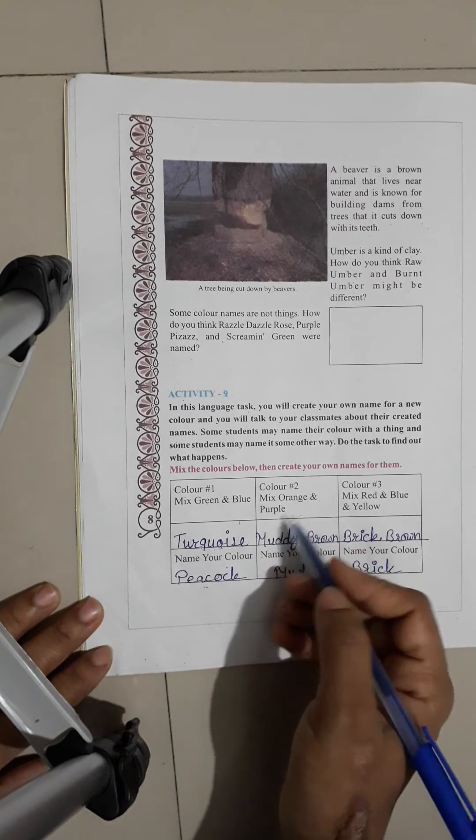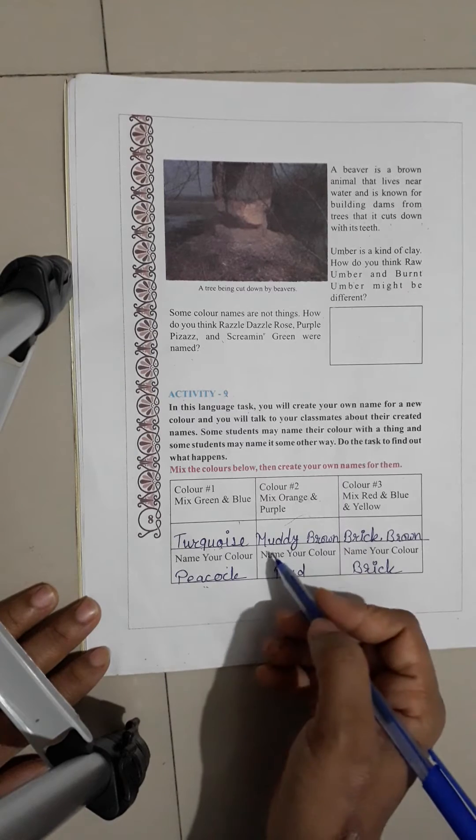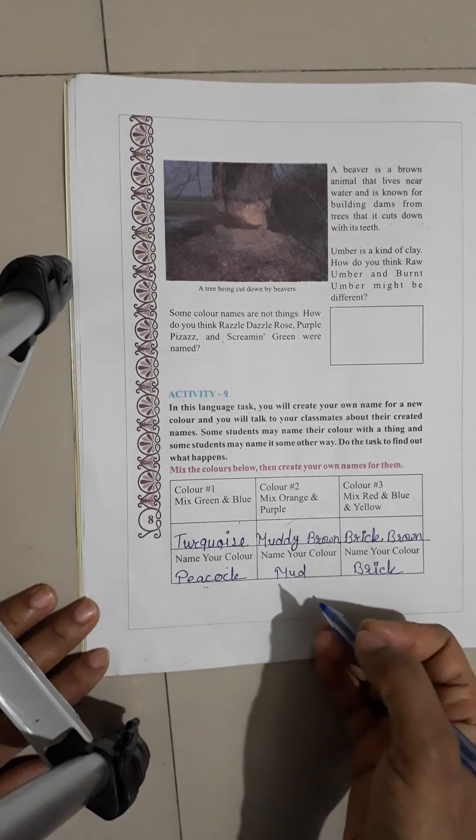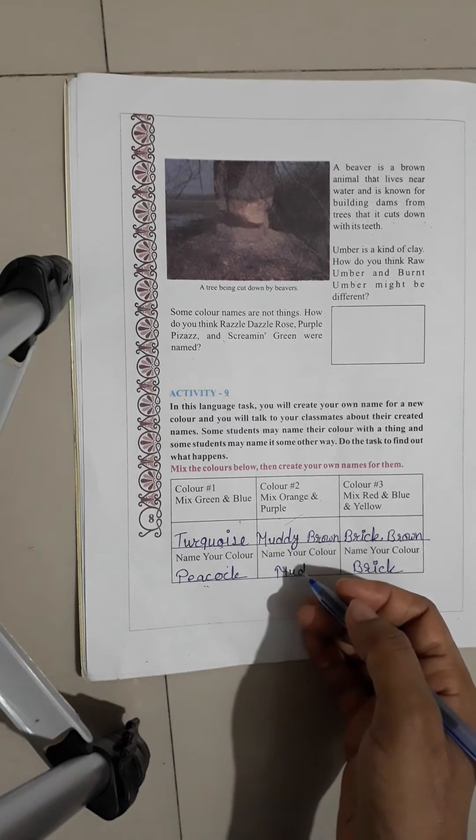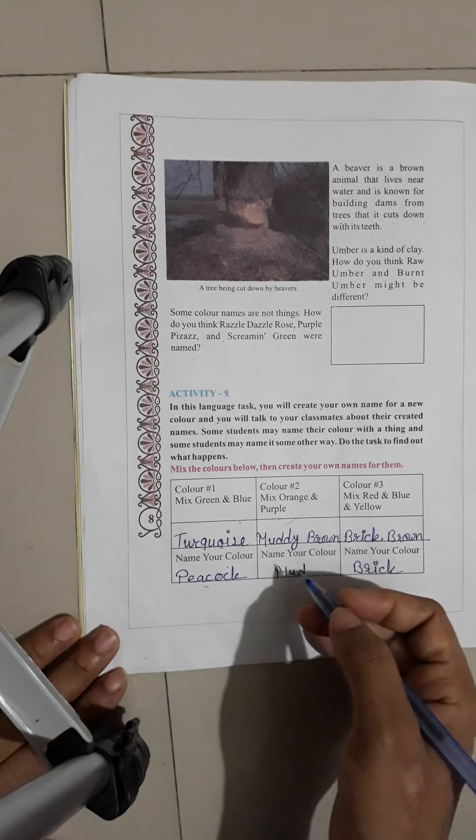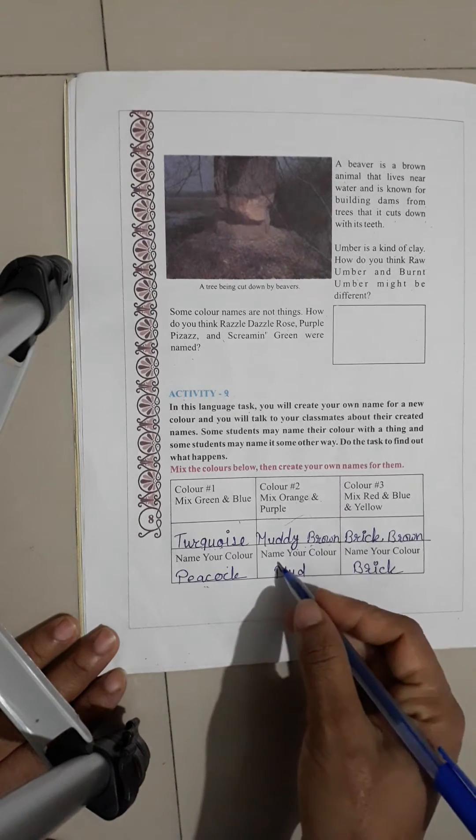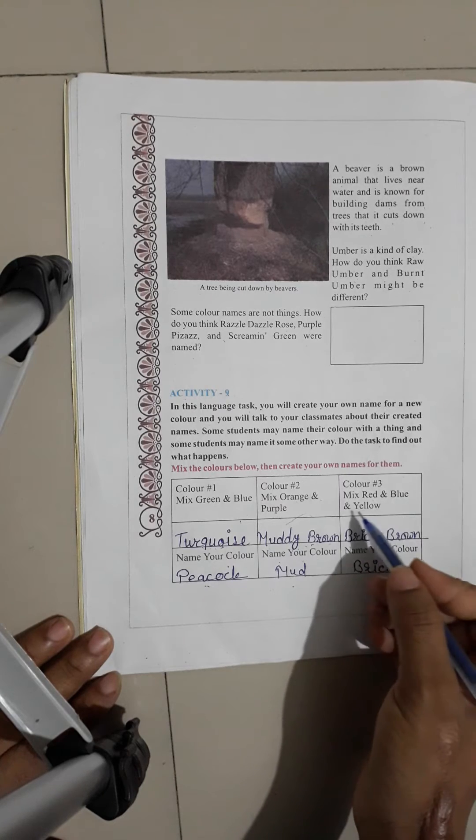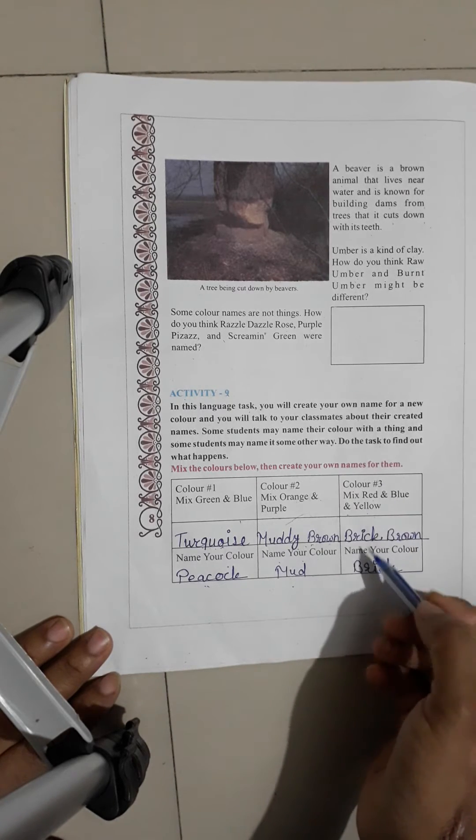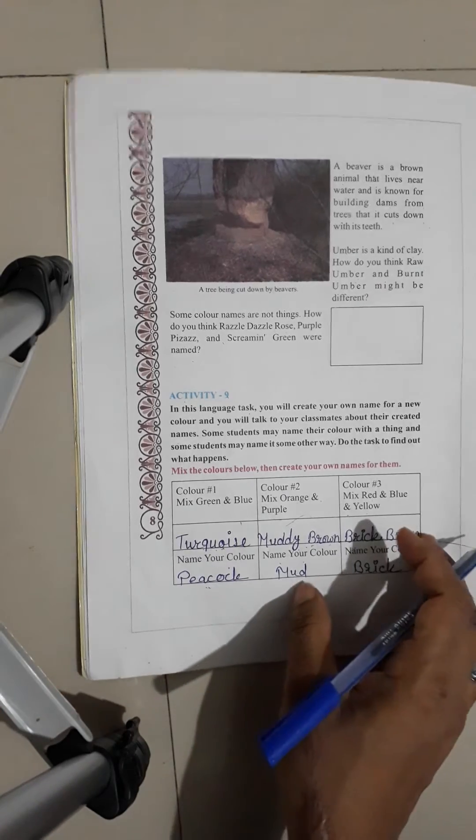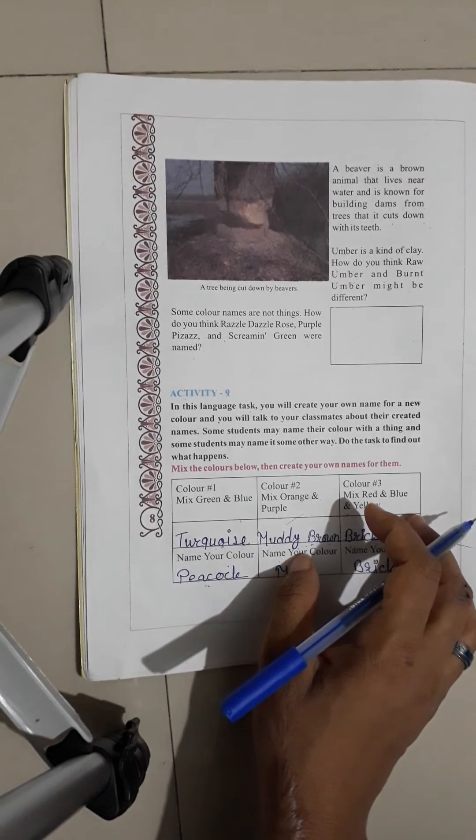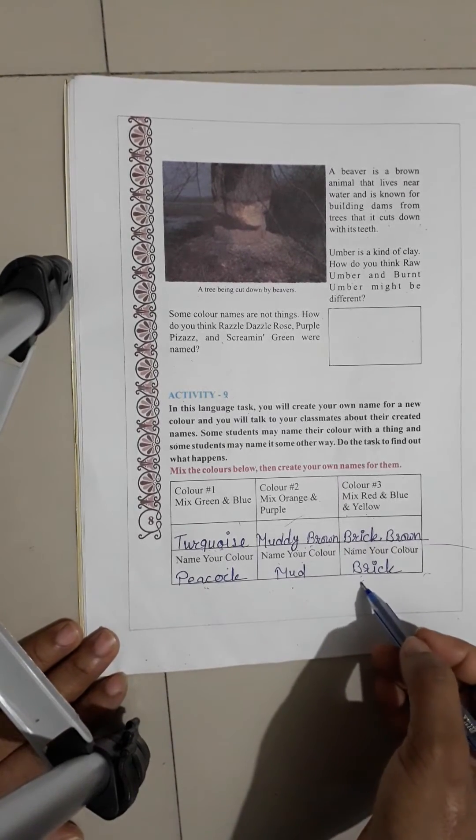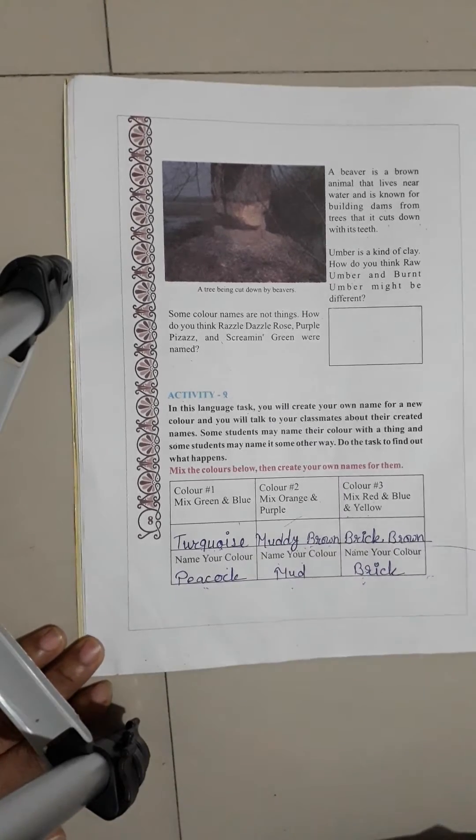Mix orange and purple. Orange and purple color, so what is muddy brown? Muddy brown color. Mix red and blue and yellow, these are three colors. Which color will be brick brown? We will give you brick.